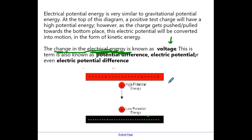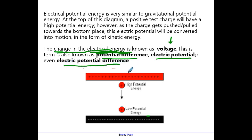Hopefully you're familiar with voltage from other classes — we learn about it in grade nine science and also in Chemistry 30. Voltage has a few different names: we can call it potential difference, electric potential, or electric potential difference. Of course we couldn't just give it one name, but they all refer to the same thing: the idea of an object having potential and then wanting to move.